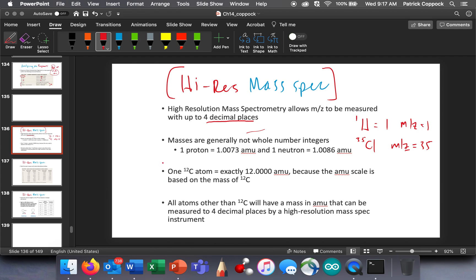But it's important to appreciate that carbon-12 is always going to be exactly carbon-12 because the AMU scale is based on the mass of carbon-12. So it's always going to be exact. Even if we had 100 decimal places, it would be 12.000000. So all other atoms besides carbon-12 are going to be measured to four decimal places with high-res mass spec.